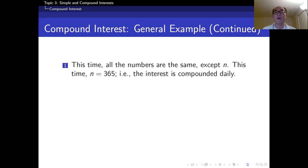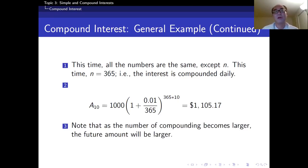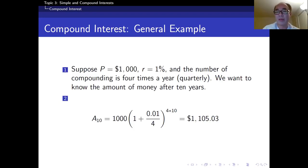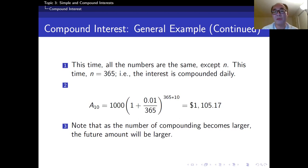Here's another example. All the numbers are the same except n. This time n equals 365, so the interest is compounded daily. I just change n to 365. If I calculate this for 10 years later, I get $1,105.17. Because the interest is small, there may not be a clear difference, but look at this. Previously, I had $0.03 here, but this time I have $0.17. As the number of compounding becomes larger, the future amount will be larger. That's a general observation.